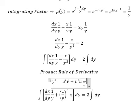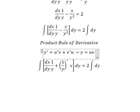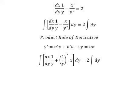So if we do this integration, we get u times v. So this one we have x over y. This one we have y and we put c.